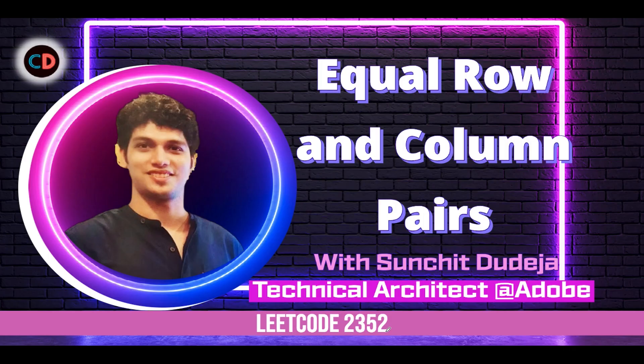Equal row and column pairs, LeetCode 2352. As I told, it's a medium level question. And if you have any doubt understanding this question or if you want to ask anything from me in general, please feel free to drop a message on the Telegram group or the Discord server of Coding Decoded. Both the links are stated below.